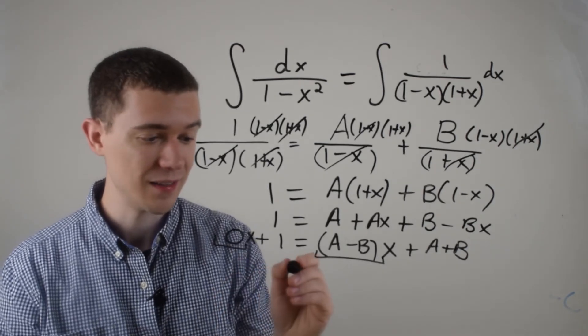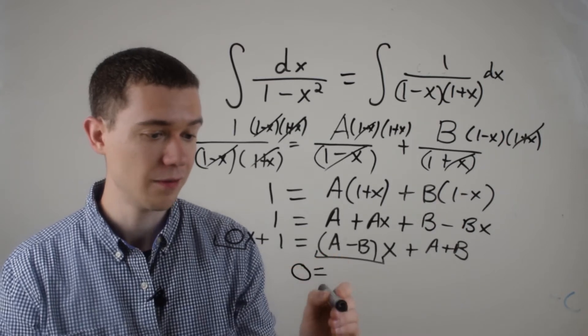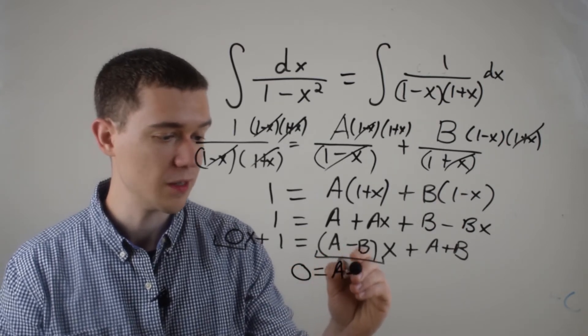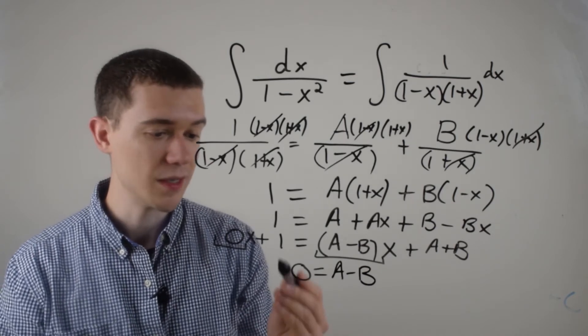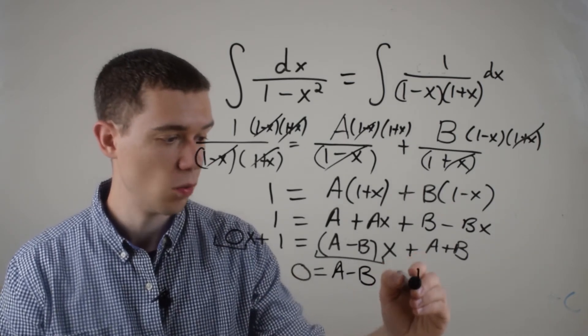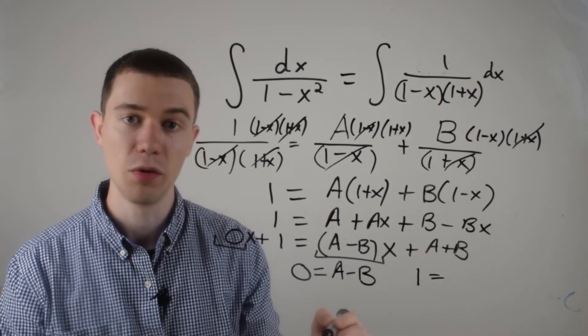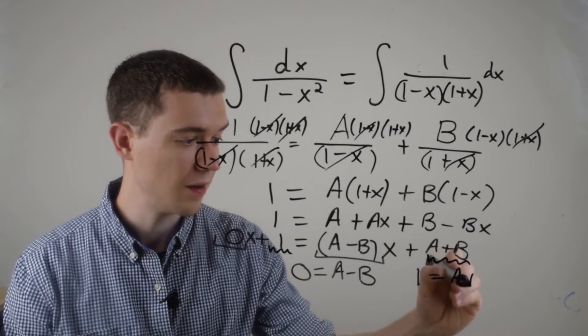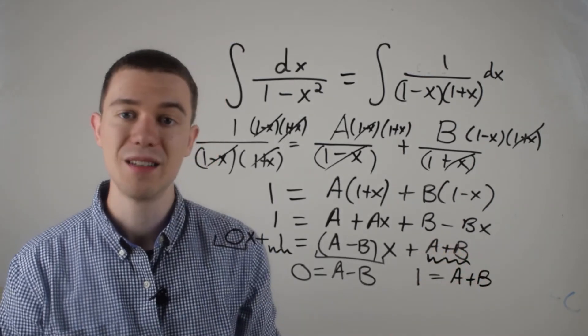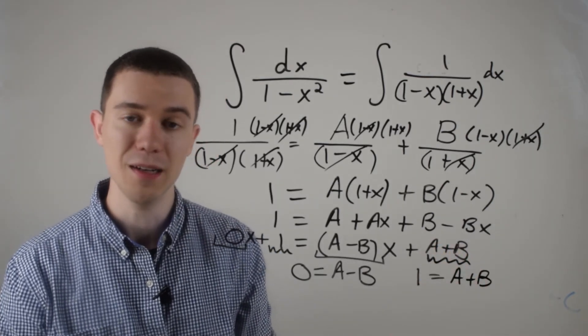In this case, 0, the coefficient of x on the left, had better equal A minus B, the coefficient of x on the right. And likewise, the constant on the left, 1, has to equal the constant on the right. Which in this case is A plus B. So what do I have here? I have a system of equations. I have two equations and two unknowns.